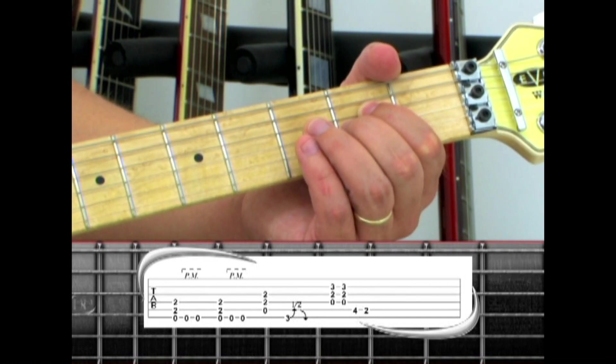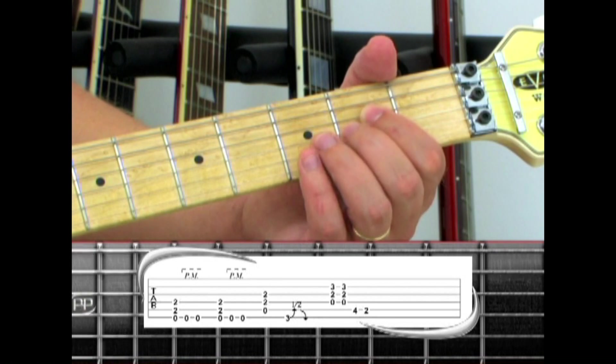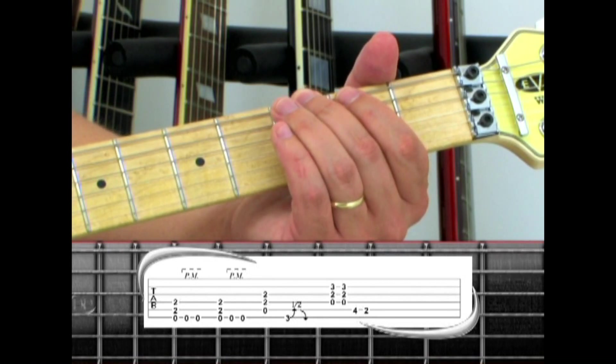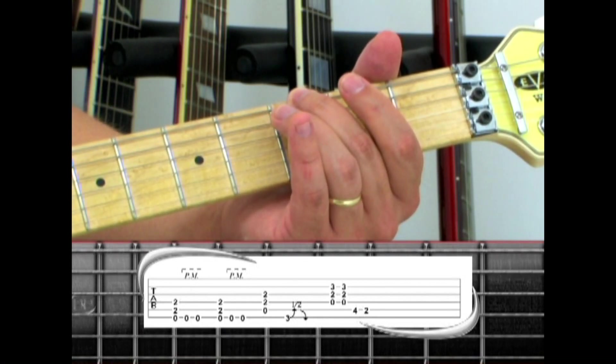Play the sixth string third fret with the middle finger, with a half bend and release, then a D5 chord.